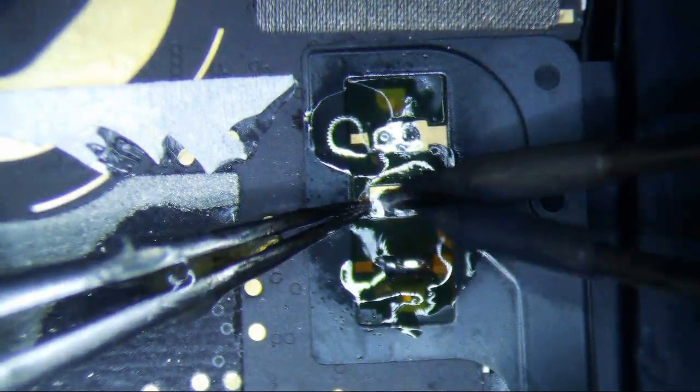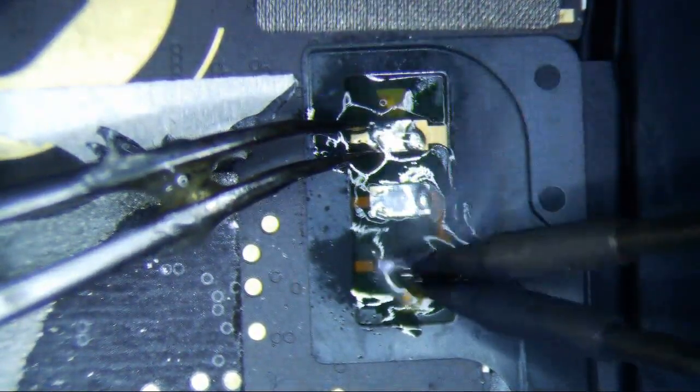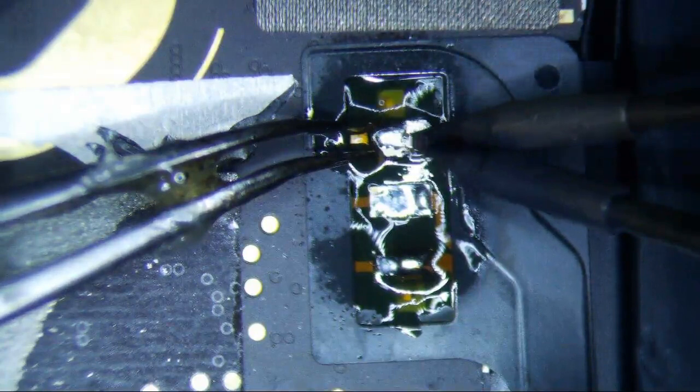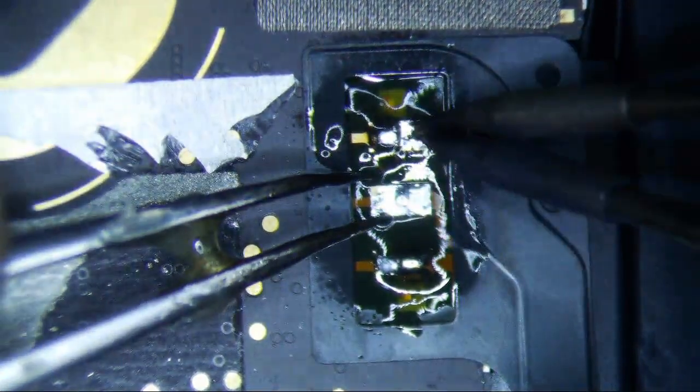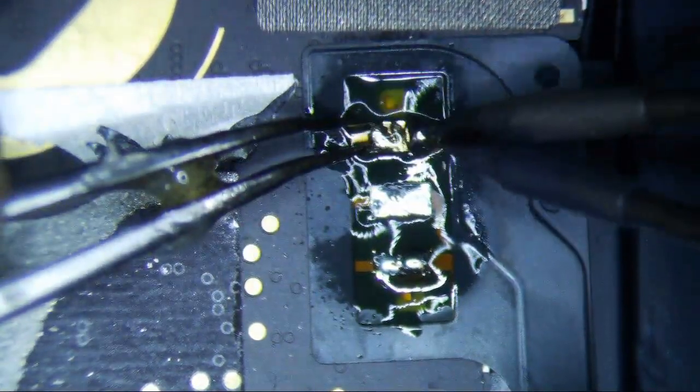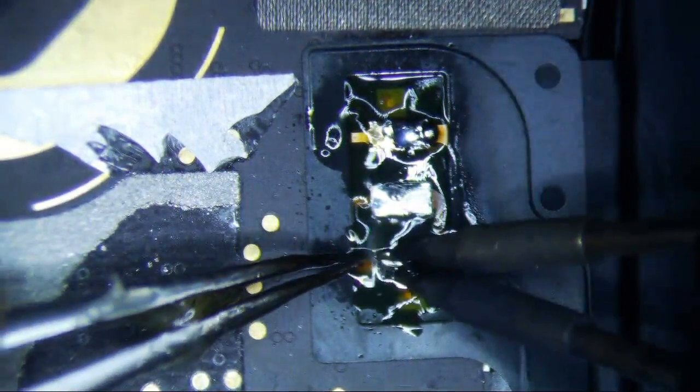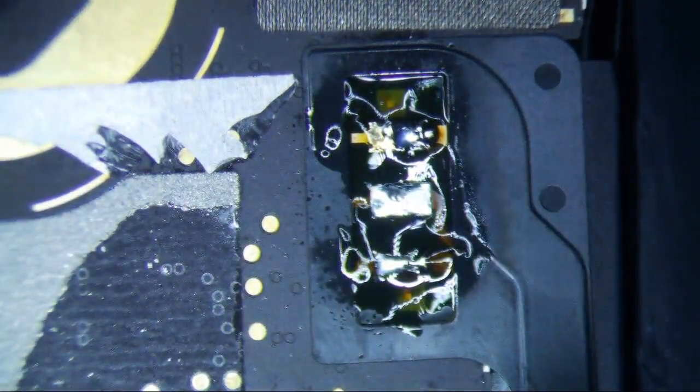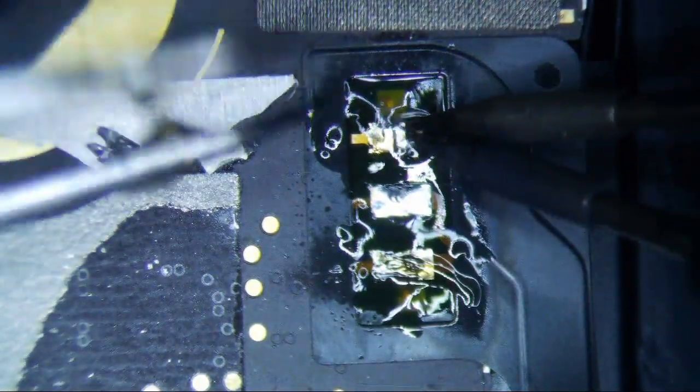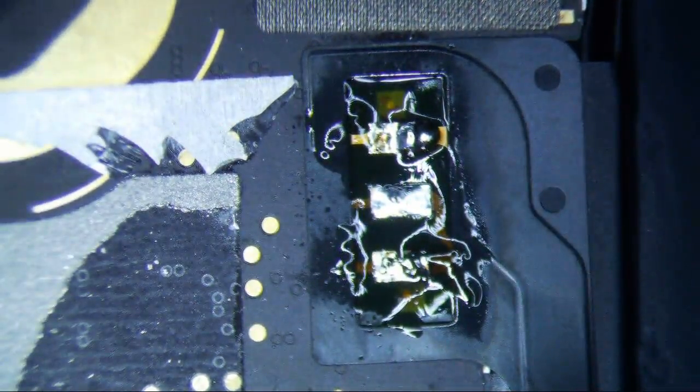And then basically you just kind of go like this with it. Don't forget about the flux. Push down. This is too much solder so we'll just move it over here a little bit. Make sure it's flat. So that's good. If you want to remove some of this solder that's fine too. Just get some wick. If you don't have wick then just don't worry about it. Just don't put too much to begin with. That's really it.